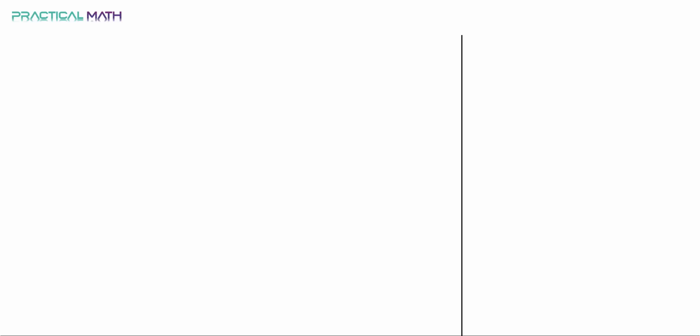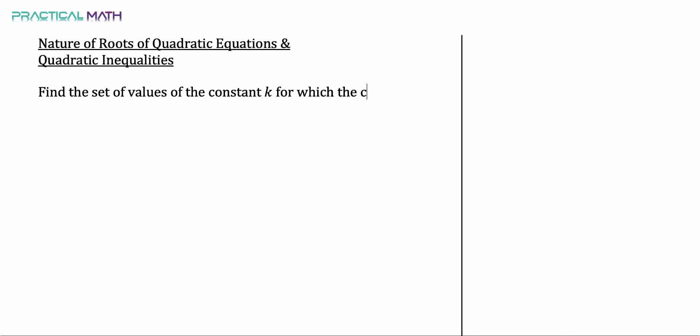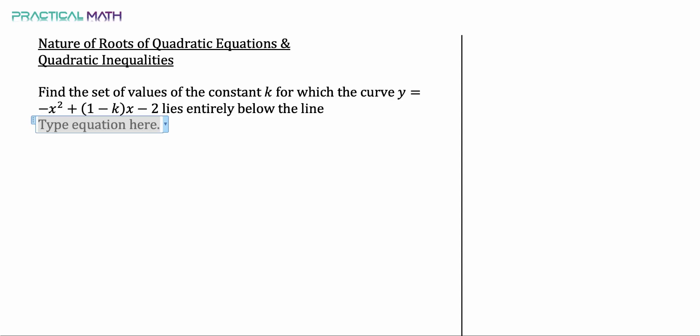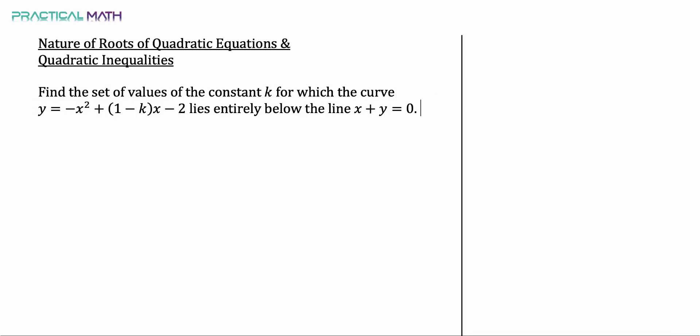In this video we will be talking about the nature of roots of quadratic equations as well as quadratic inequalities. The question asks: find the sets of values of the constant k for which the curve y equals negative x squared plus (1 minus k)x minus 2 lies entirely below the line x plus y equals 0. That's a 4-mark question. Pause to try it, then keep watching.